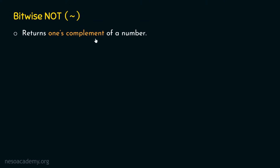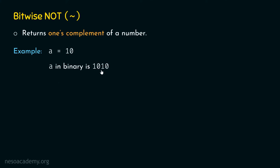Let's understand what one's complement means through an example. Consider A = 10. The binary representation of 10 is 1010, so A in binary is 1010. Because bitwise operators can only operate on bits, we convert the decimal value 10 to its binary equivalent, which is 1010.